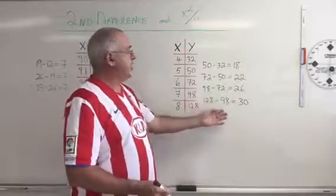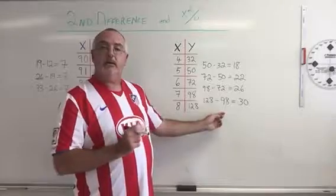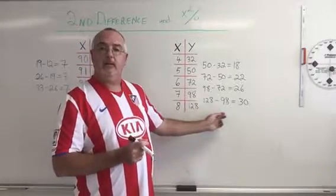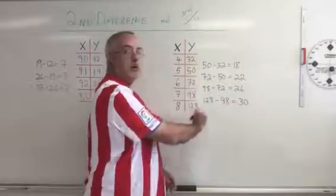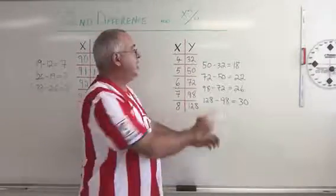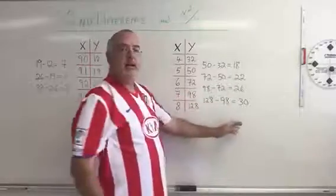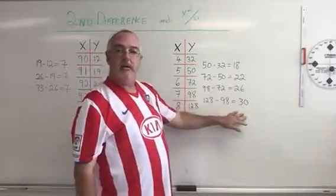To figure out whether this is quadratic, one of the tricks that we can use is the second difference. We do the same sort of thing, except instead of using the numbers in our y side of our table of values, we use these numbers that we got as our answers when we tested for the constant difference.